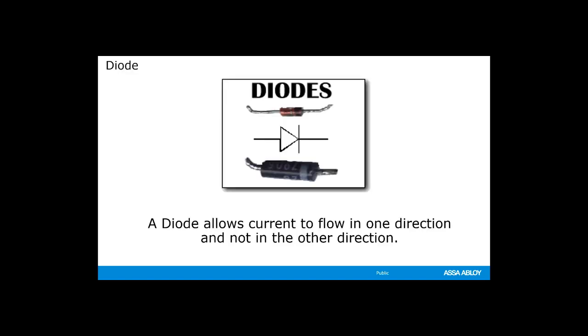A diode is an electronic device that allows current to flow only in one direction, but not back in the other direction.